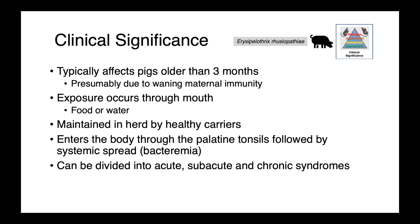So there's a reservoir potentially present. It enters the body through the palatine tonsils in the back of the throat, followed by systemic spread — we get bacteremia. And we can divide disease in pigs into acute, subacute, and chronic syndromes. These temporal markers reflect acute being rapidly progressive, subacute somewhat slower, and chronic occurring over days to weeks.